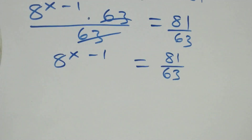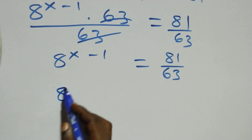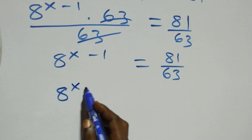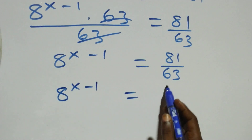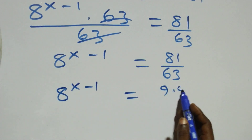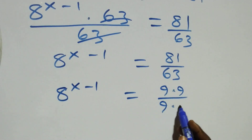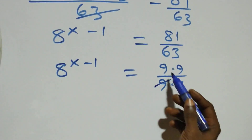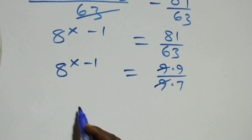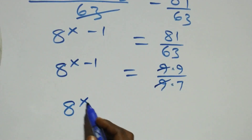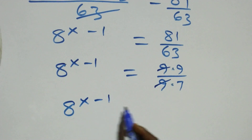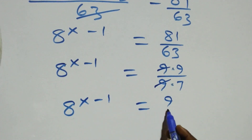We can write this as 8 raised to power x minus one equals 81 over 63, which is 9 times 9 over 9 times 7. The nines cancel each other, and we have 8 raised to power x minus one equals 9 over 7.